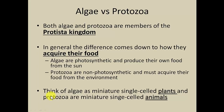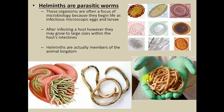Miniature plants — algae. Miniature animals — protozoa. Next on the list are what we call the helminths. Helminths are defined as parasitic worms. These have the potential to be the largest on the list of microbes.